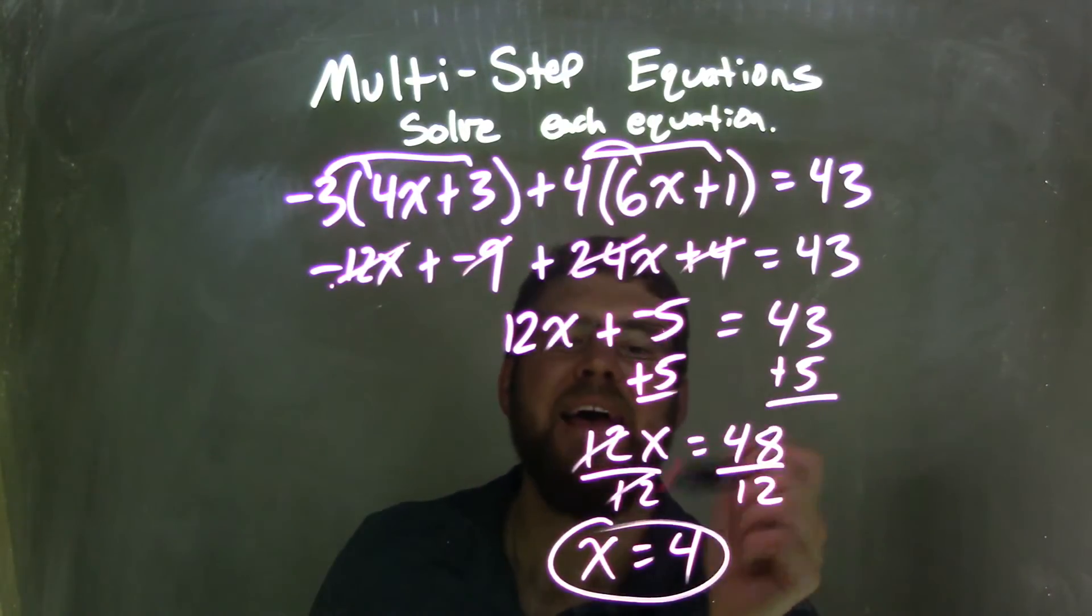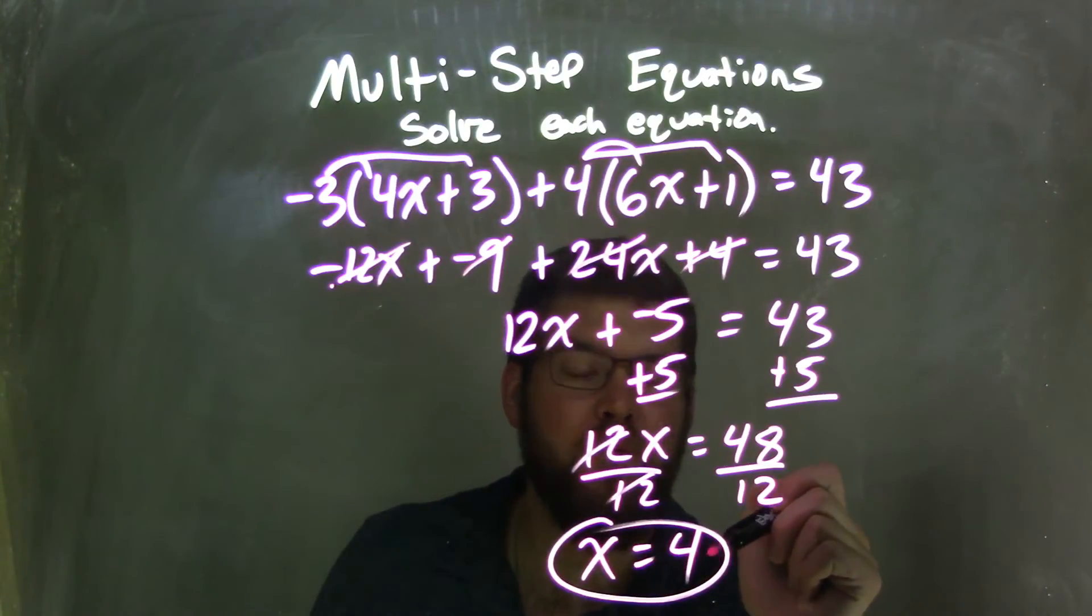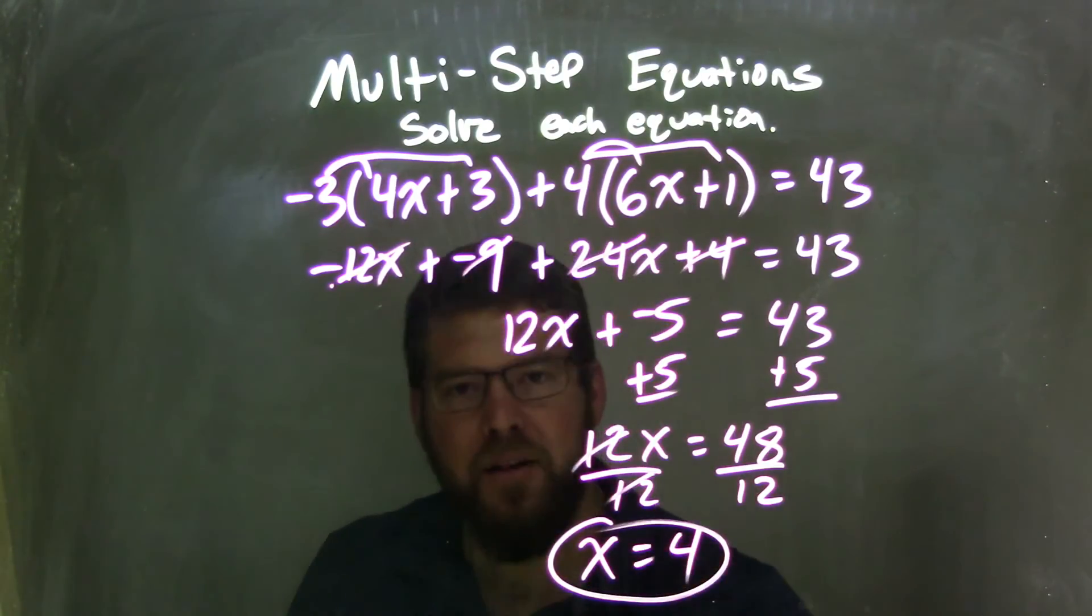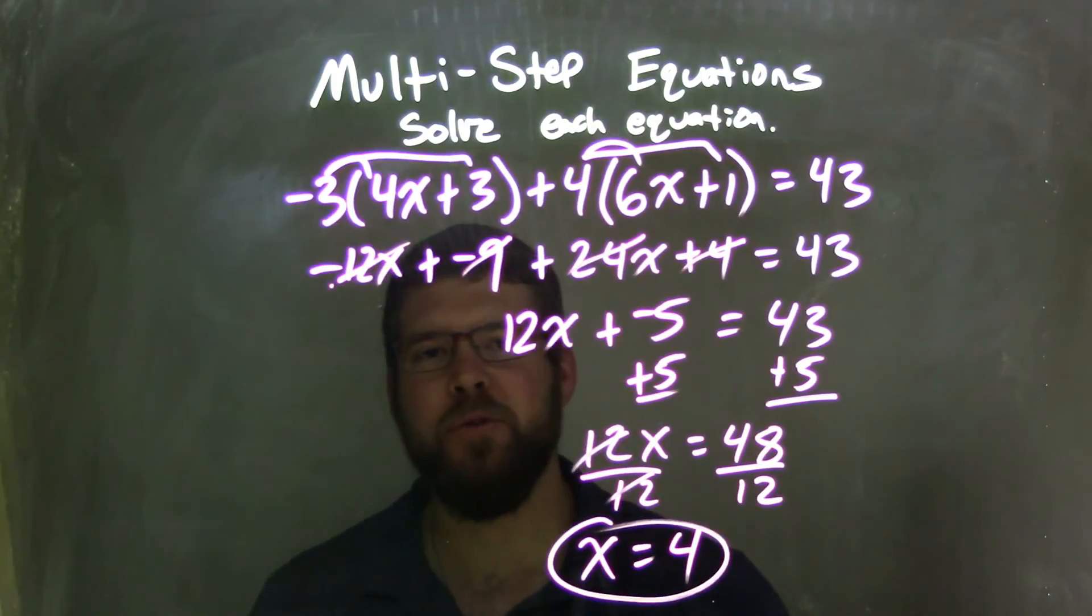Divide by 12 on both sides, leaving me x by itself on the left, and 48 divided by 12 being 4 on the right. And so my final answer is x equals 4.